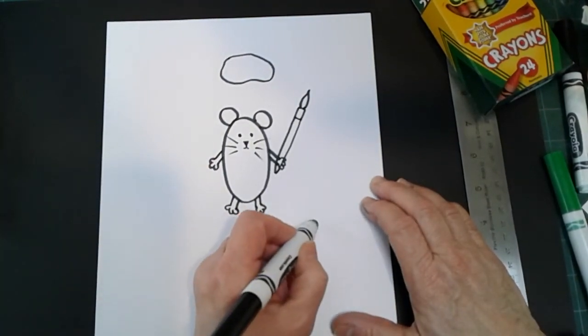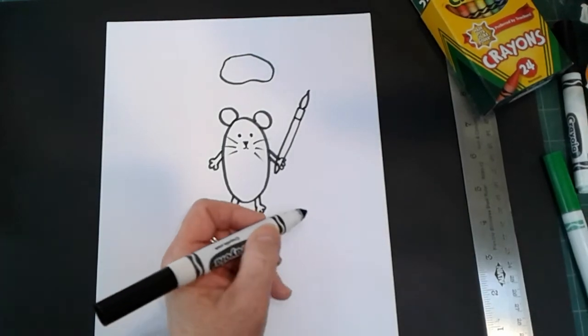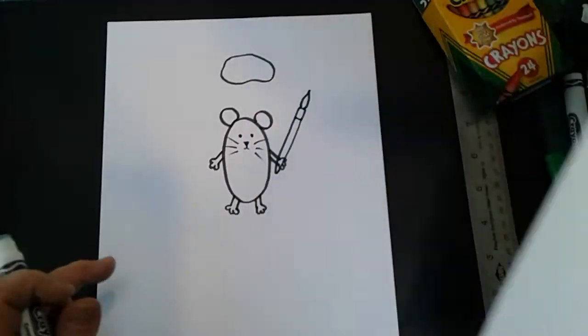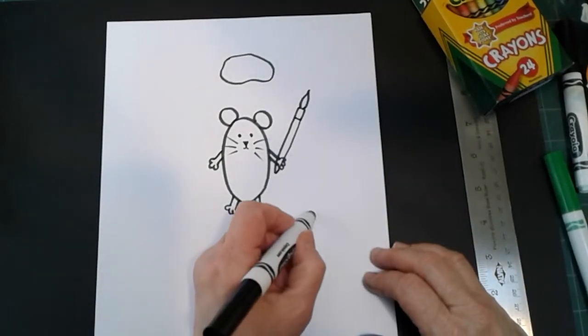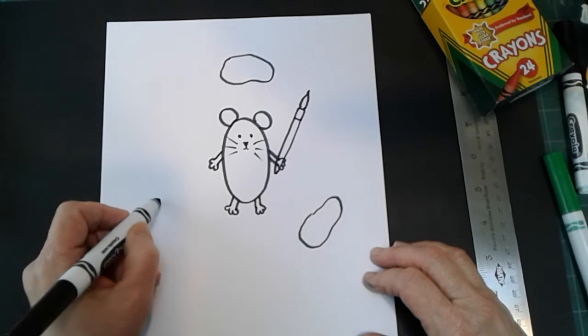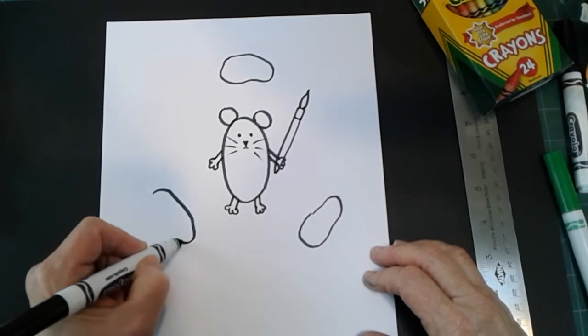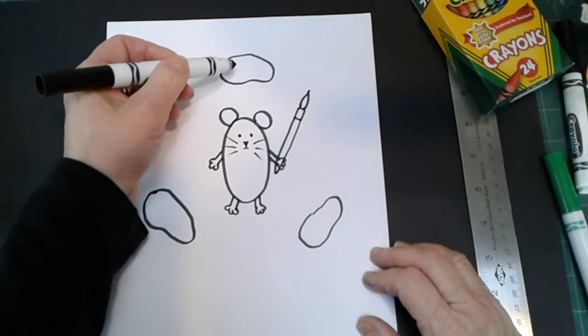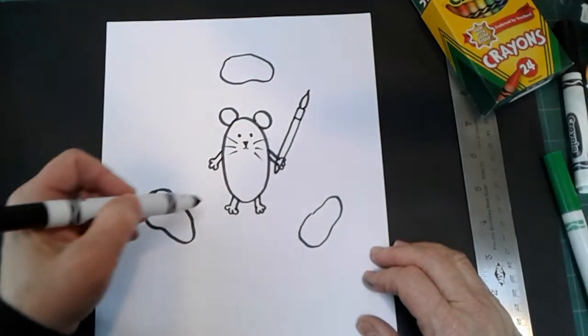And then I'm going to make two more down here to kind of create a triangle. Yellow, blue, and red. So let's put a shape down here. And another blobby shape down here. That's going to be my yellow, my blue, and my red.